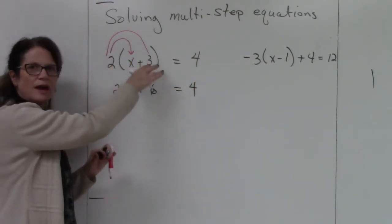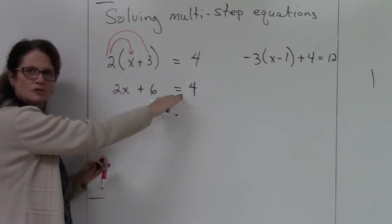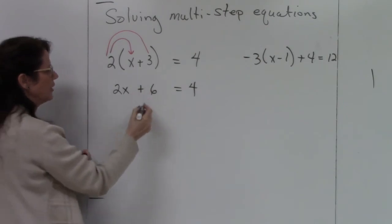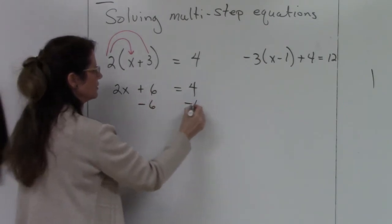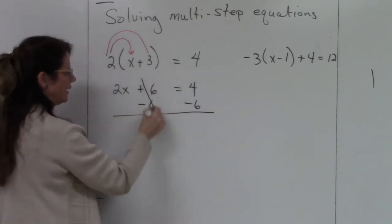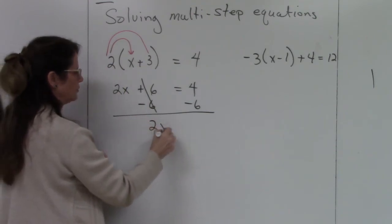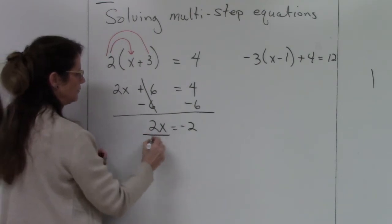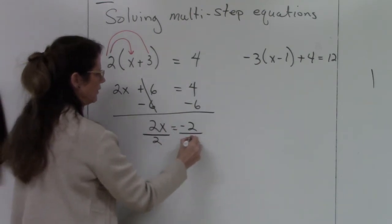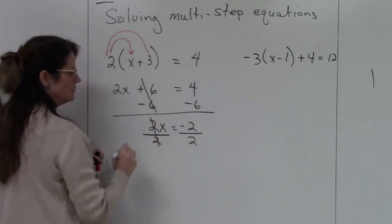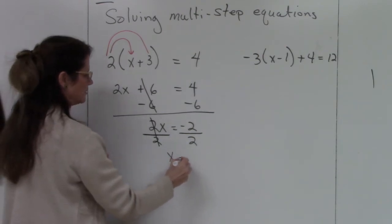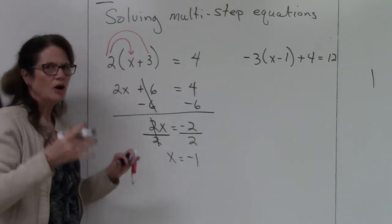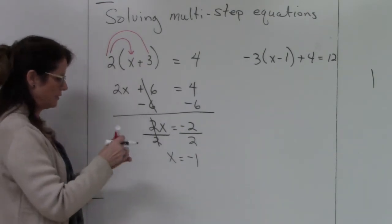That was the extra added step — now I have a two-step equation. So I'm going to subtract 6 on both sides; that cancels, leaving 2x equals negative 2. Now I'm at a one-step equation. Dividing both sides by 2, that cancels, and I end up with x equals negative 1.